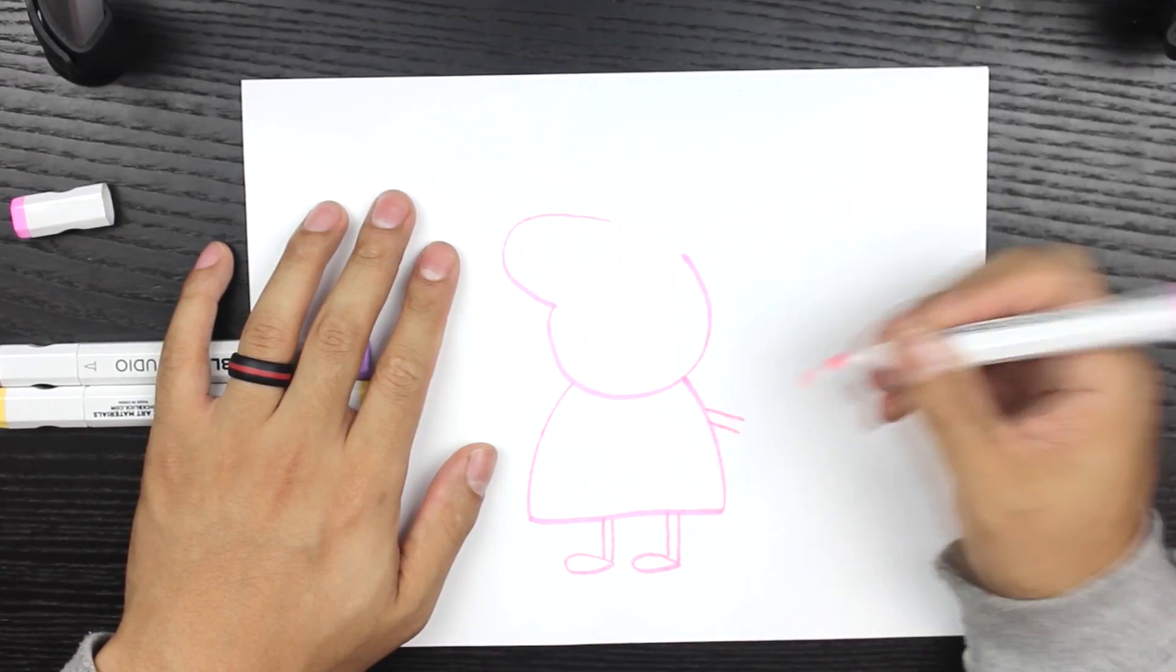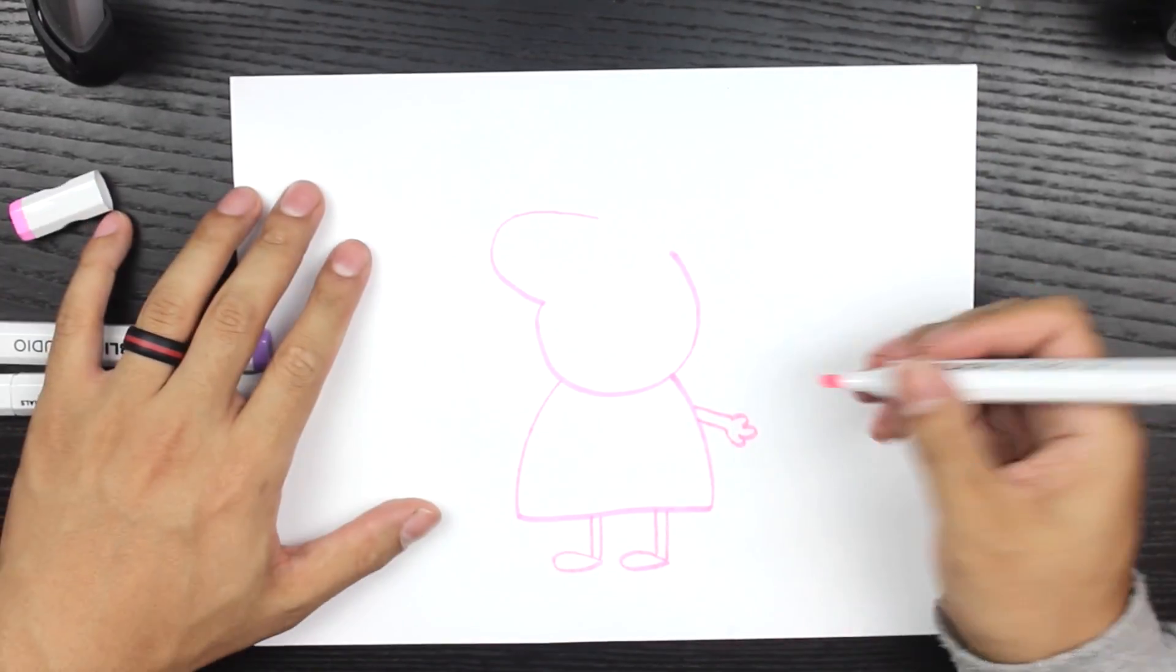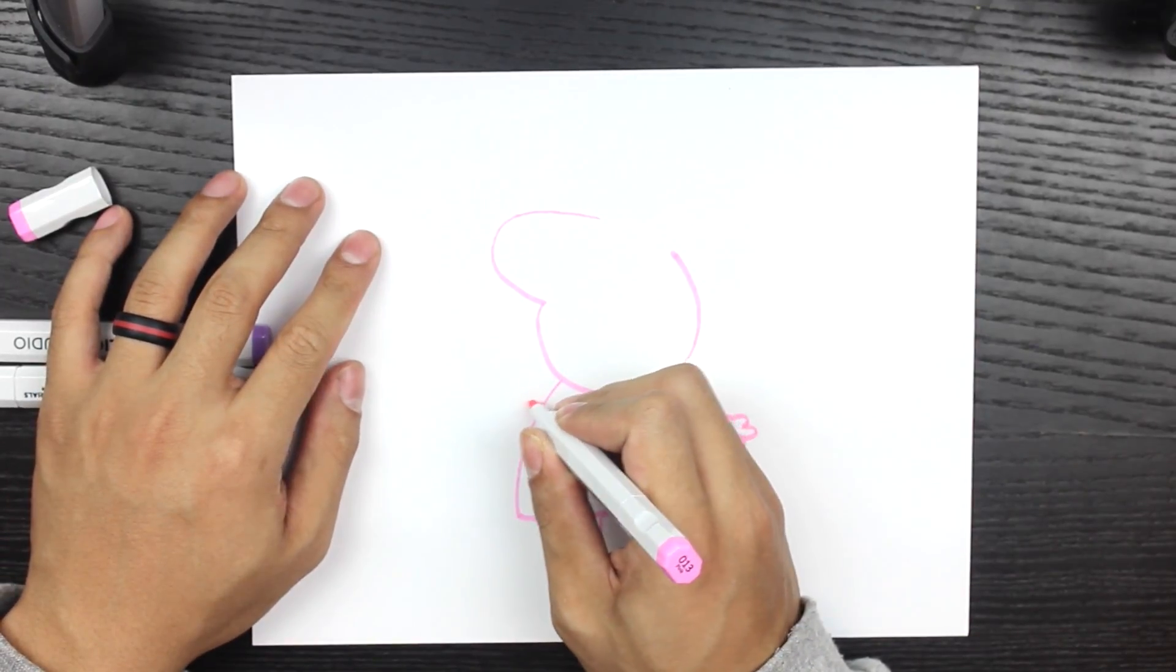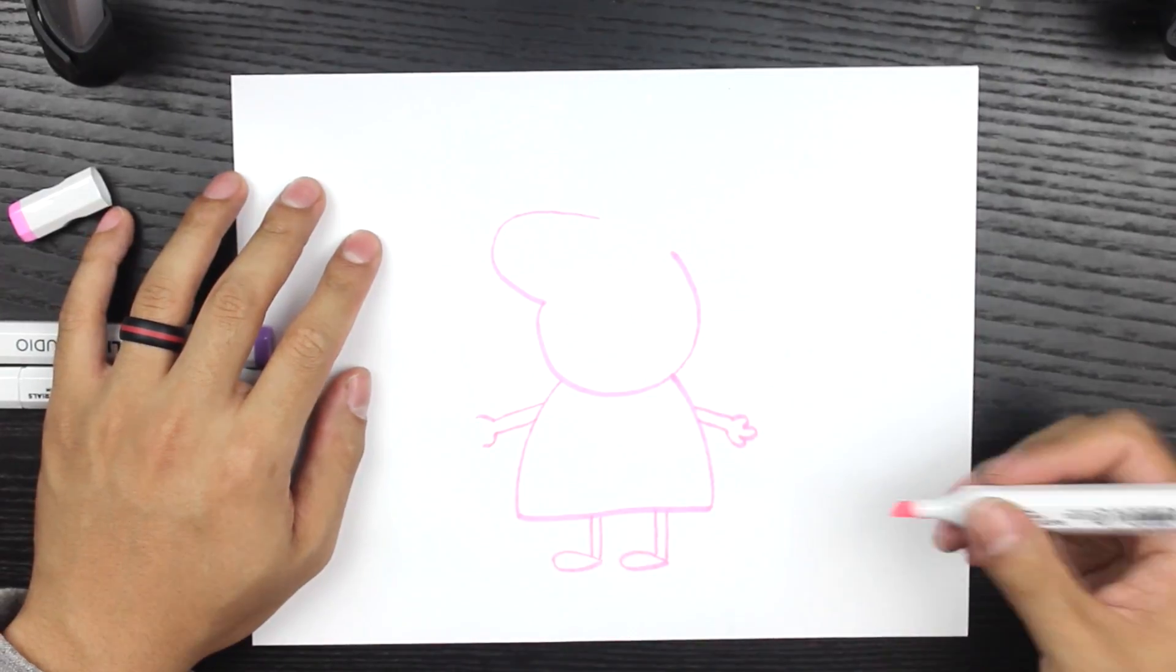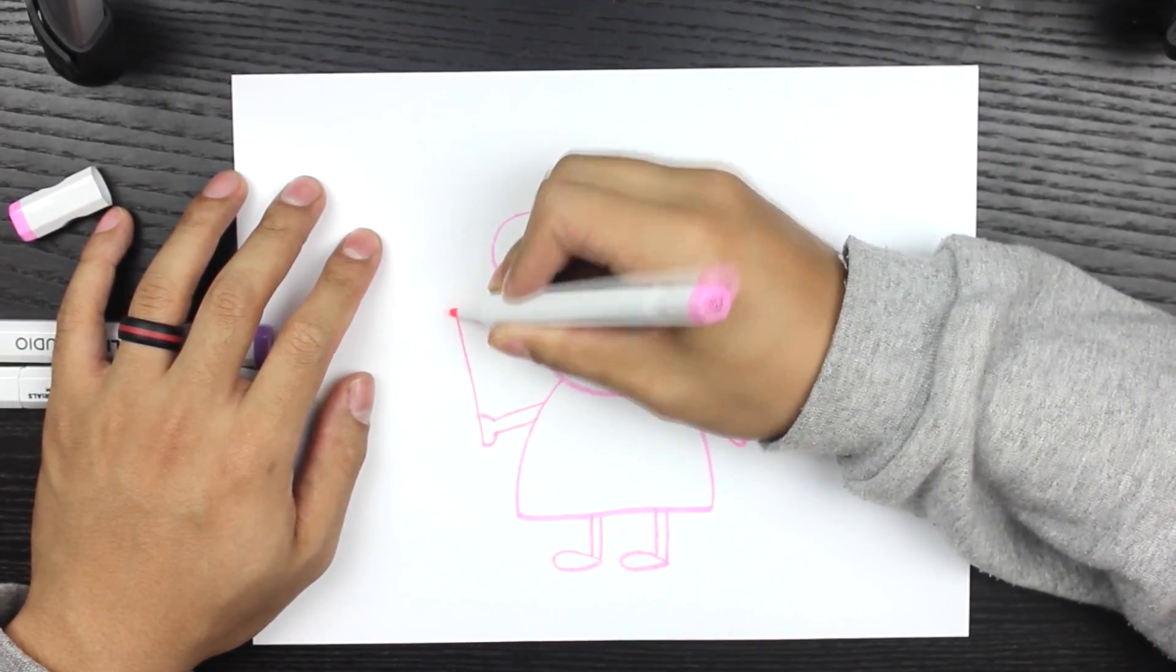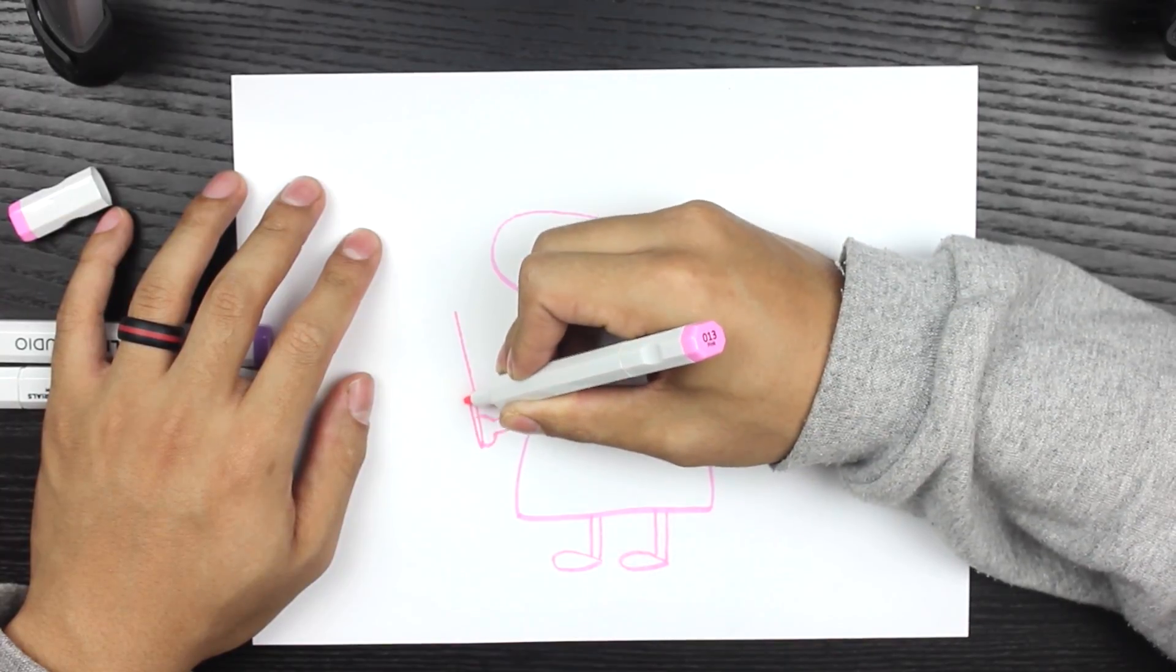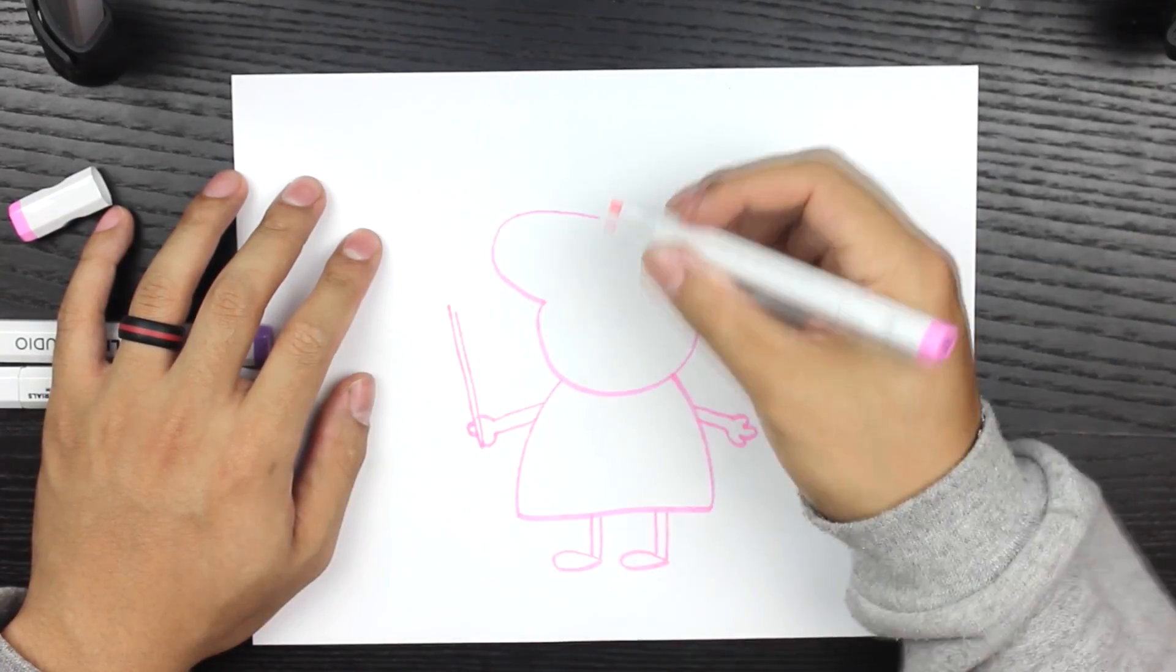We're going to draw one hand this way, and she will have three fingers. Then we're going to do the same thing on the other side, except we're not going to draw half the hand so we can put a wand in her hand. And while we're at it, we might as well do it right now. So there's that line of the wand, and we're going to create the finger right there.